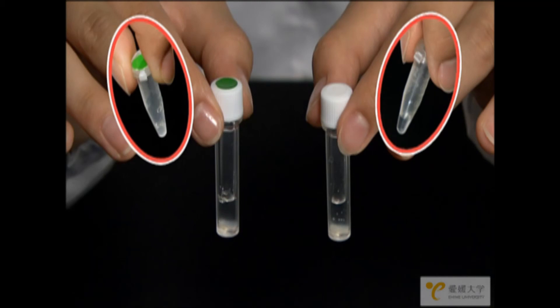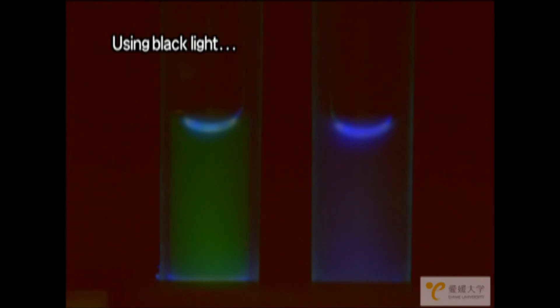Two hours after the experiment, we use a black light to confirm the presence of the fluorescent protein. You will see the solution in the green tube glow in the dark, but the contents of the unmarked tube will not. This proves that it is possible to synthesize the protein that exists in living cells.